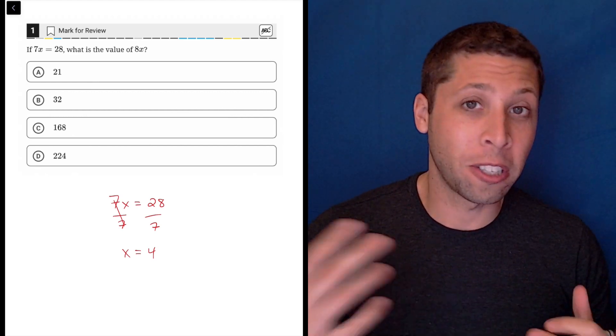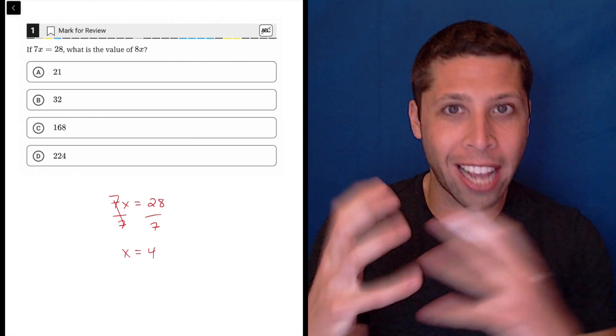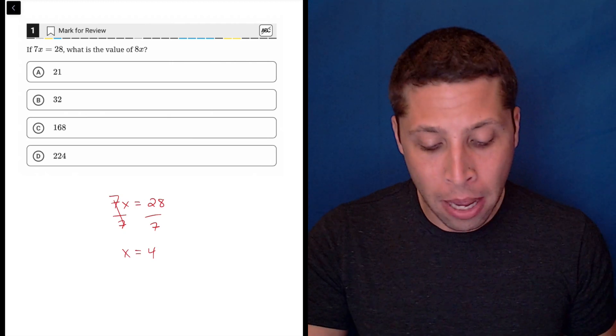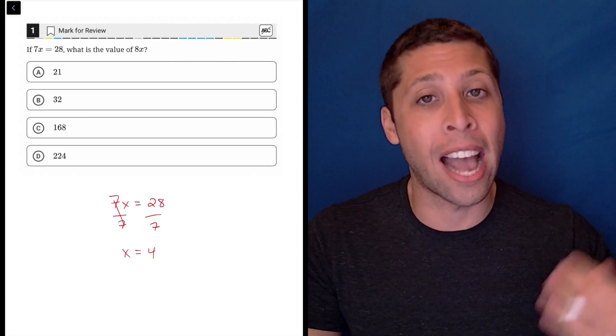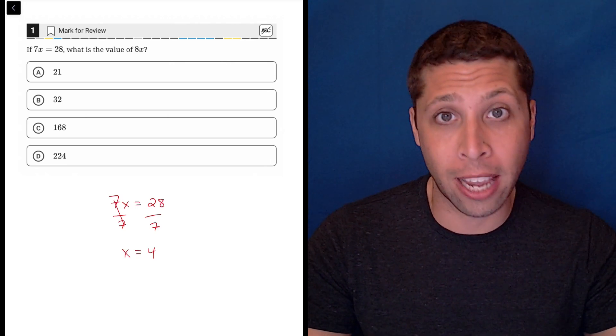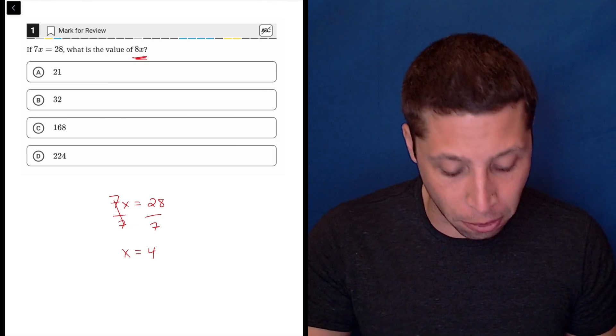Now luckily that's not an answer choice because many of you would be tempted to pick that if it were, because you kind of associate x equals with the end of a problem. But a very common move that the SAT makes on all sorts of questions is they ask you to do just one more thing before you get the answer. And it's almost always an easy thing, but we just need to make sure we remember to do it.